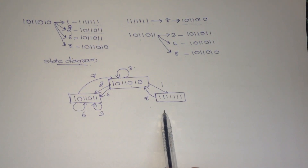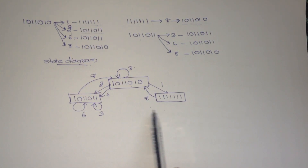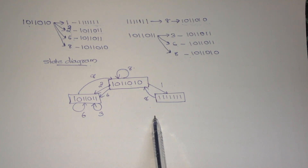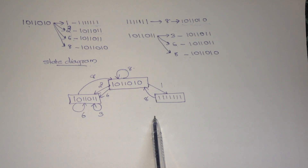Therefore the state diagram is complete. If you have any doubt, please comment. Thank you for watching. In the next video, I will explain the initial collision vector 1, 0, 0 — that is 100 — and its greedy cycle. Thank you.